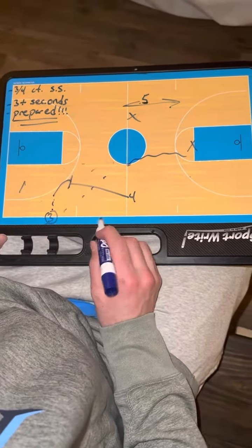Now, what I really like about this is you can use this as a safety right here. So once two screens for one, and then four screens for two right there, two's just cleared out, one's right here, four can open up and come right back to the basketball.